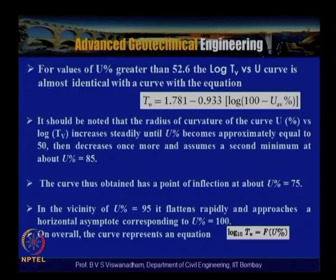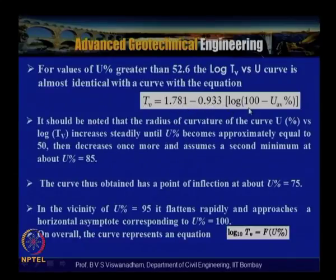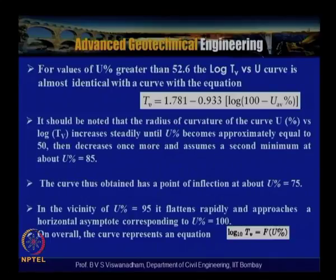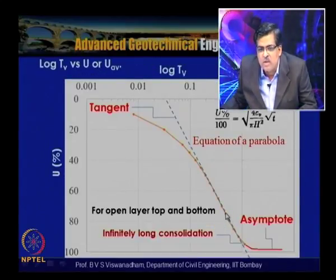For values of Uav greater than 52.6%, the log(Tv) versus Uav curve is almost identical to the equation Tv = 1.781 − 0.933·log(100 − Uav). The radius of curvature of the Uav% versus log(Tv) curve increases until Uav ≈ 50%, then decreases and reaches a second minimum at Uav ≈ 85%.